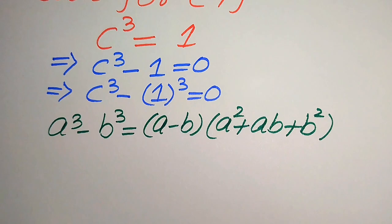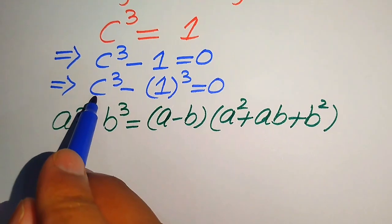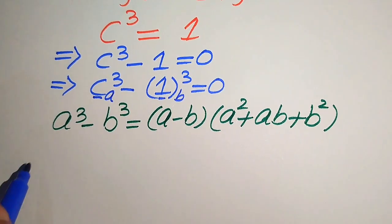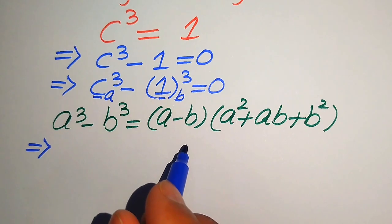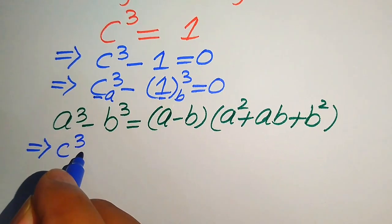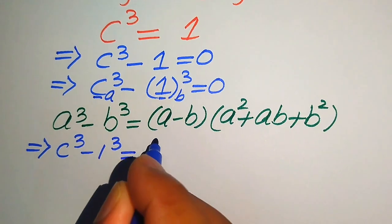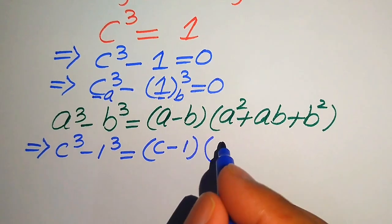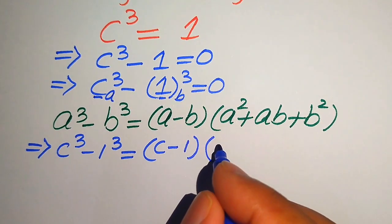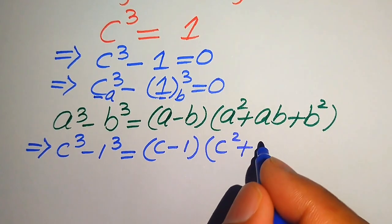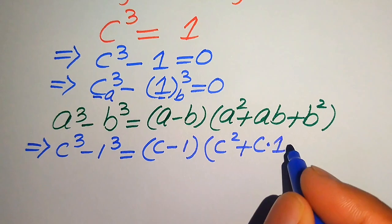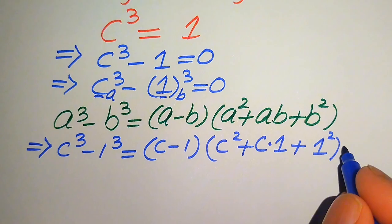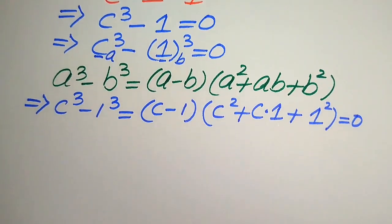According to this formula we put the values of a and b. The base of the first term is our a and the base of the second term is our b. So it will be written as c cubed minus 1 cubed equals to c minus 1, times c squared plus c times 1 plus 1 squared, and this whole equation equals to 0.